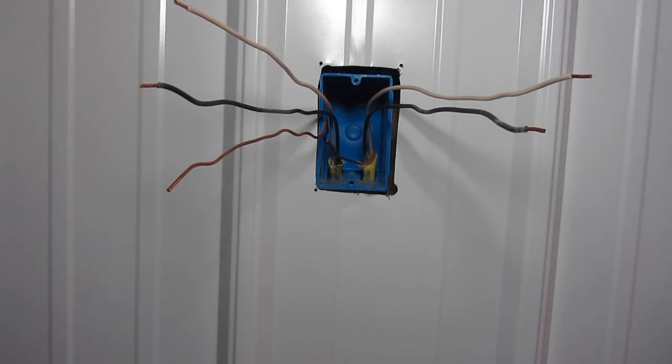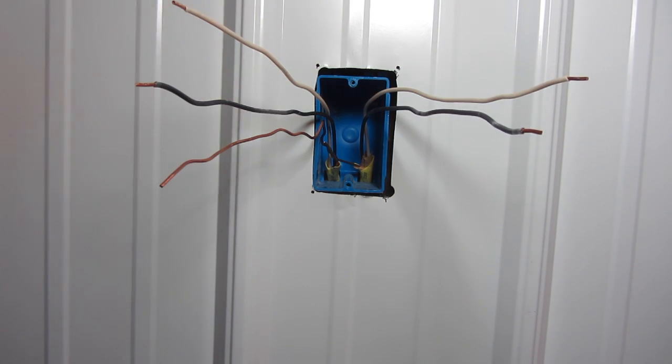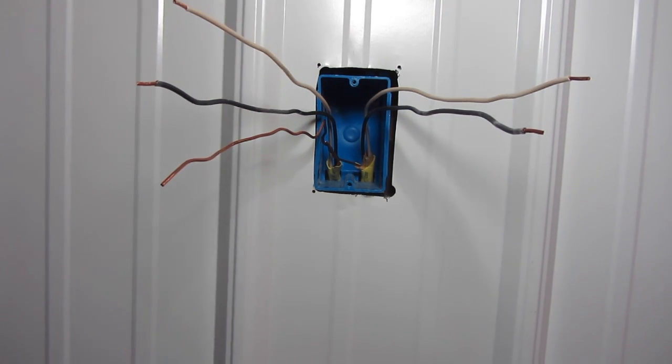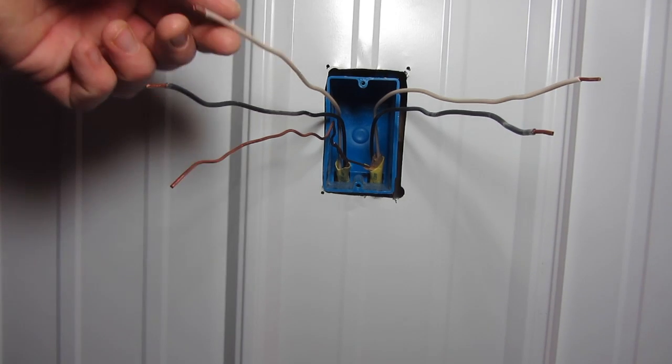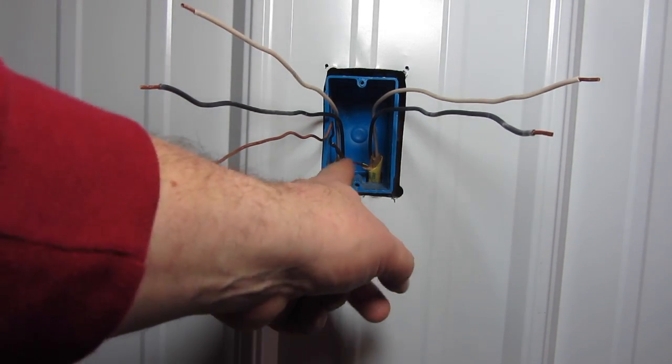As you can see, we have two sets of wires in the box. Each set has a white, a black, and a ground. Of course, in this case, the grounds are tied together.